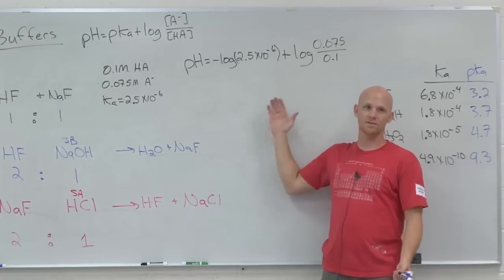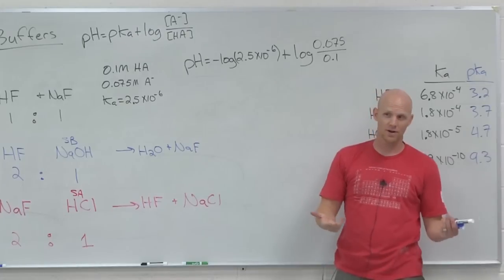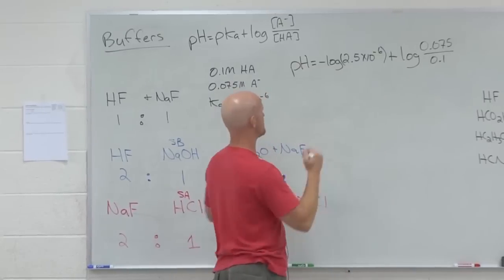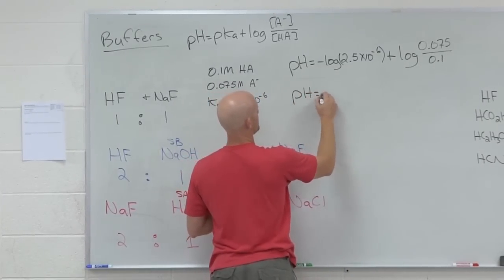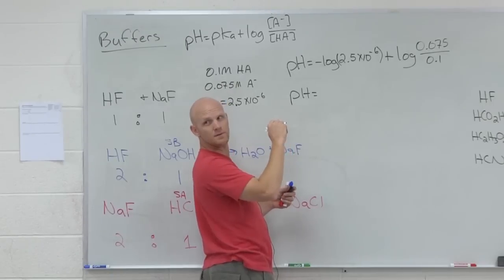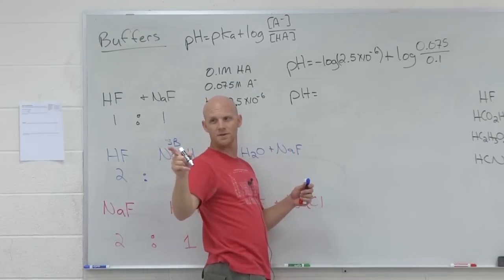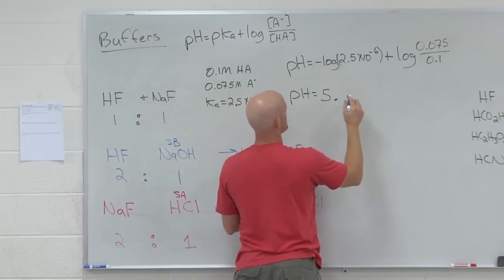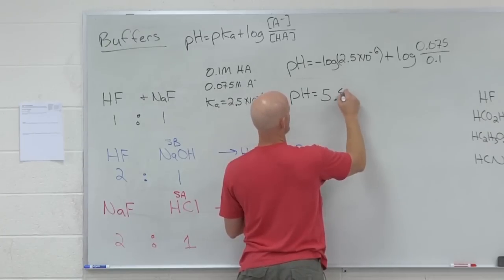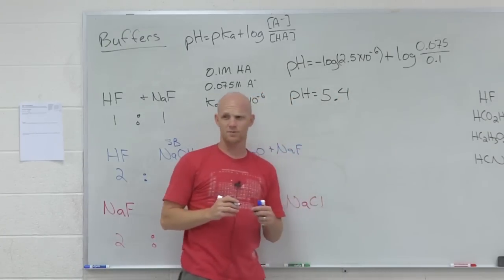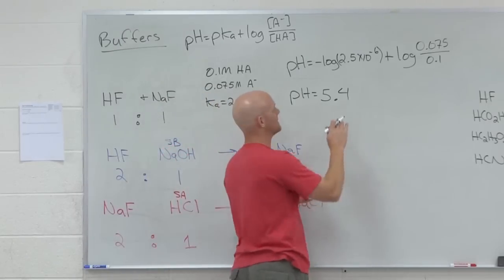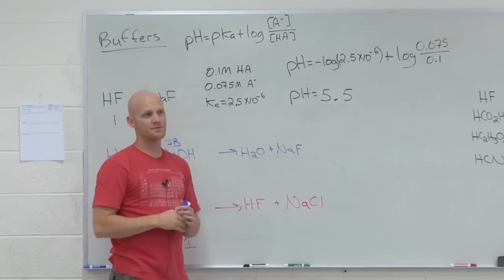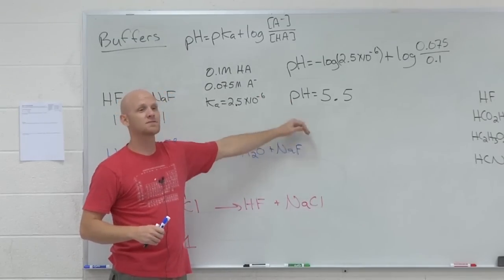You could have used Ka and plugged everything in and solve for H plus and then taken the negative log, but this is just often pretty convenient for buffers. But you can only use this for buffers. Anybody got an answer for me? What'd you get? And you got 4.42? I got 5.42. Oh, close enough. Somebody rounded somewhere. So I don't know, 5.4 or 5.5, somewhere in there. You got 5.5? I'll go with that. So 5.5, problem done. That's the last type of calculation.